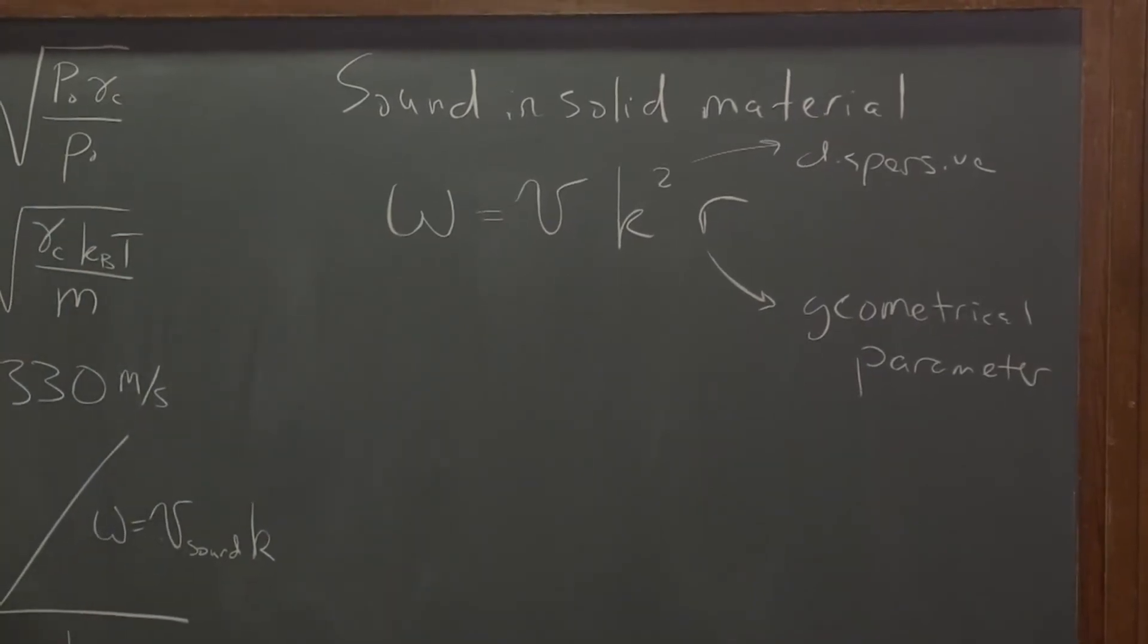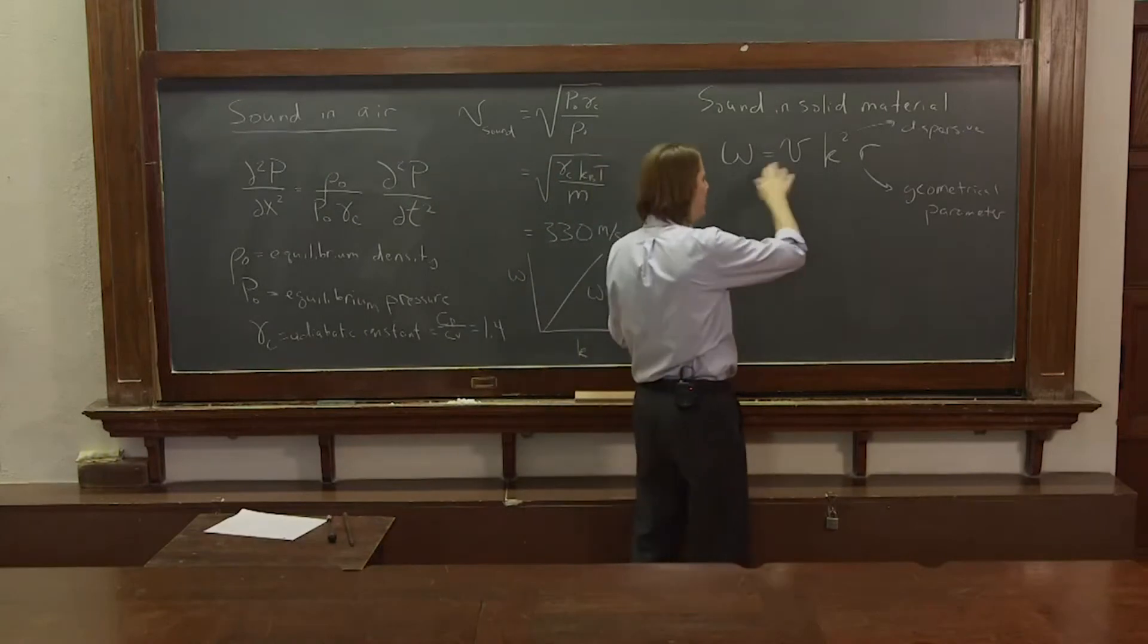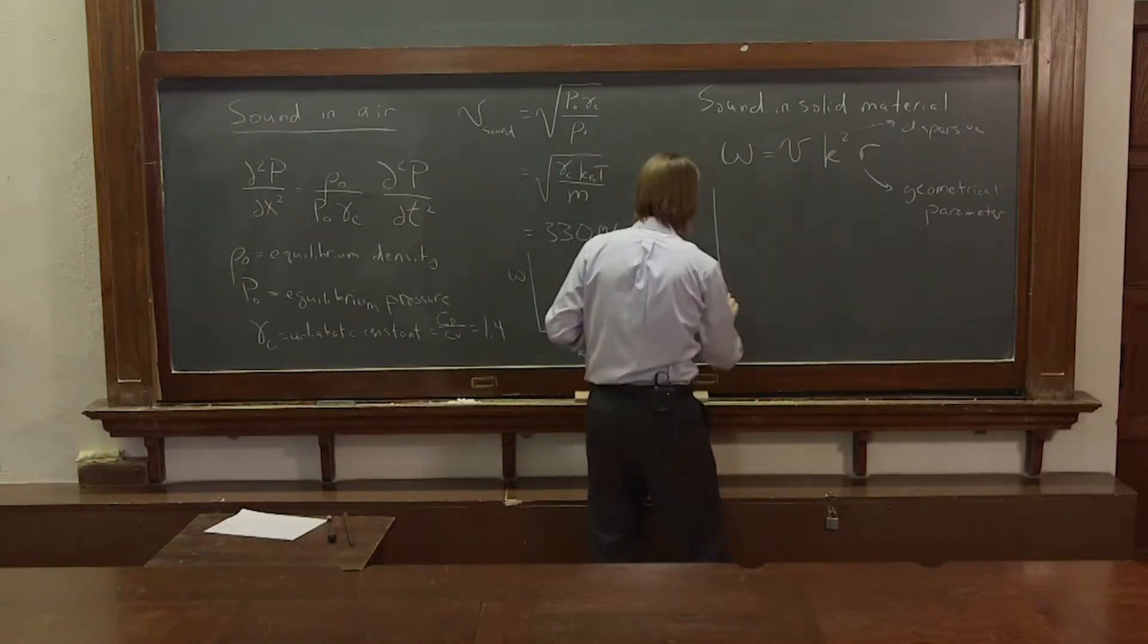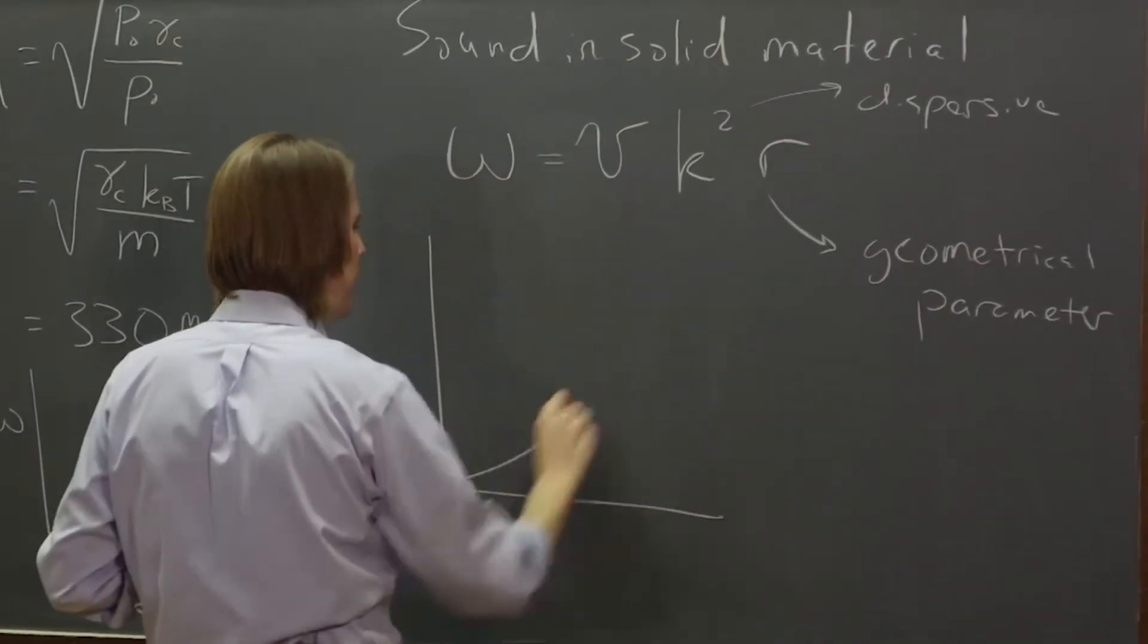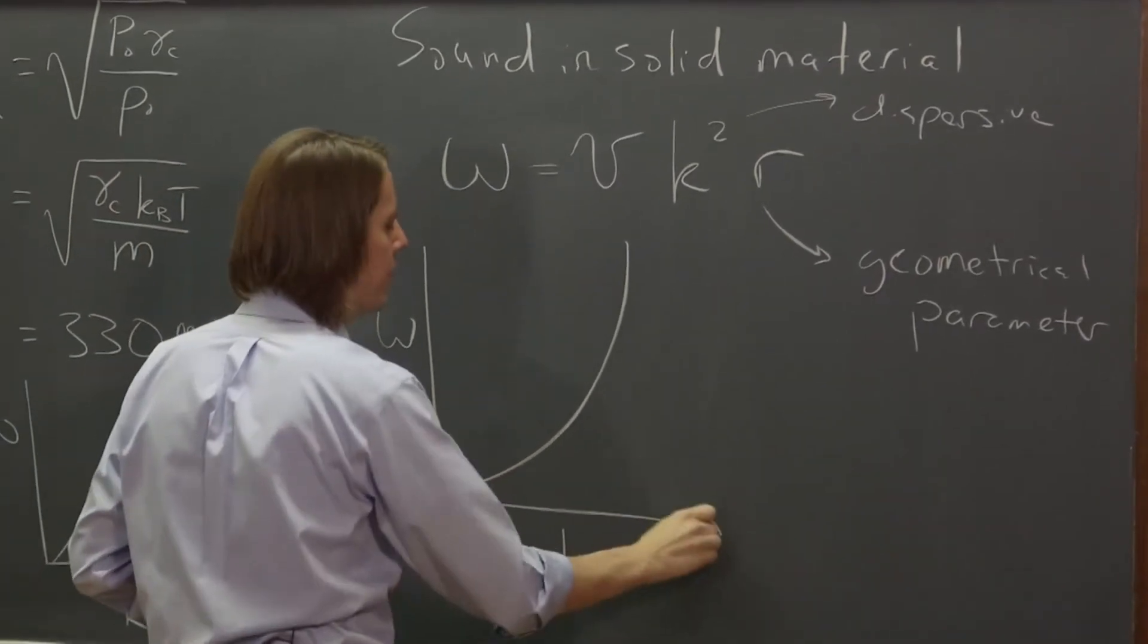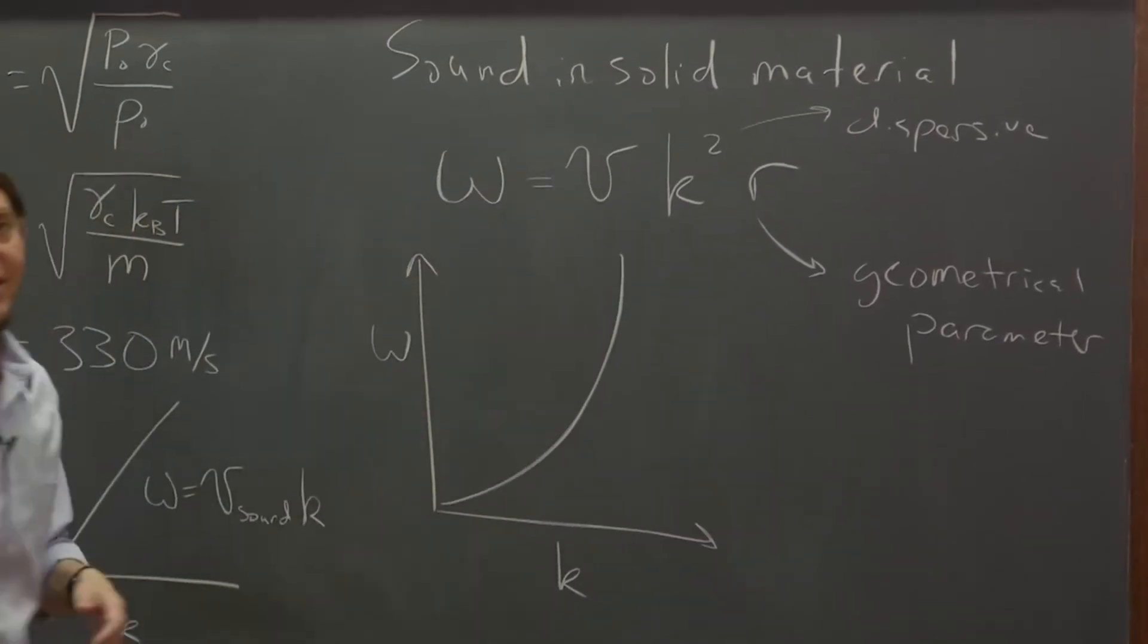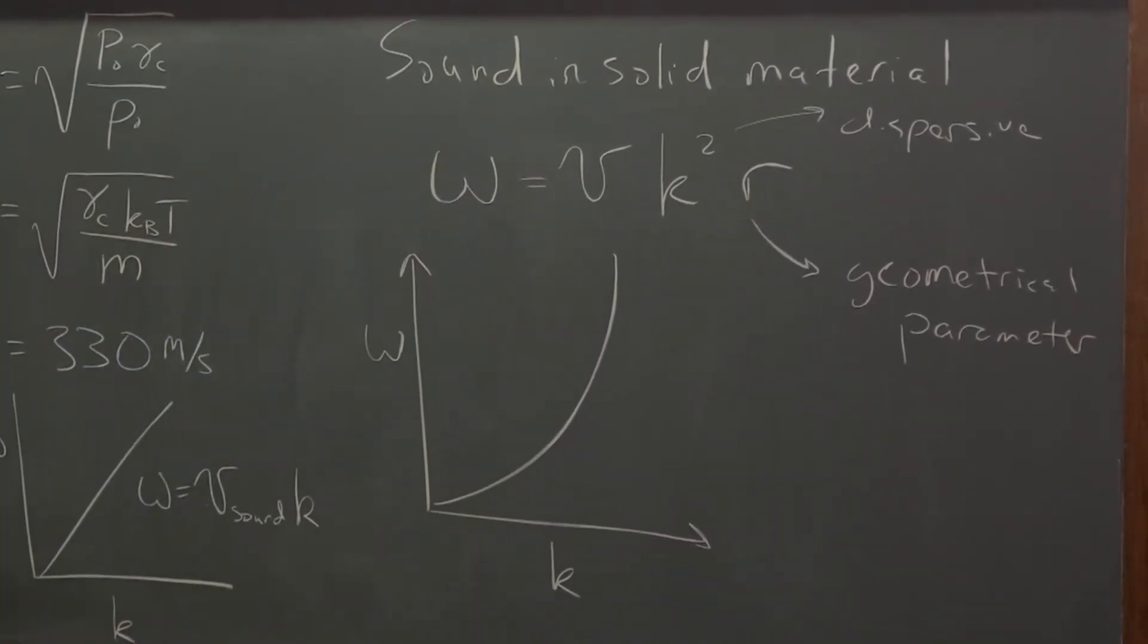So exactly what r is depends on what object and what its geometry is and everything. But that's really no reason that's there. But the fact that this is squared means it's dispersive. And it's all complicated and different shapes will give you different forms and everything. But in general, you get something where ω v looks more like this, like that. I'm sorry, ω k looks more like that.